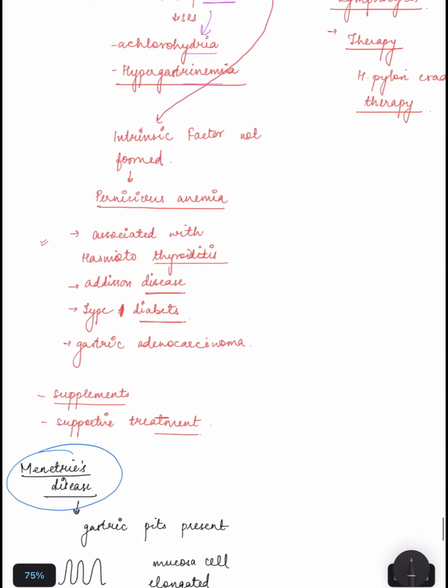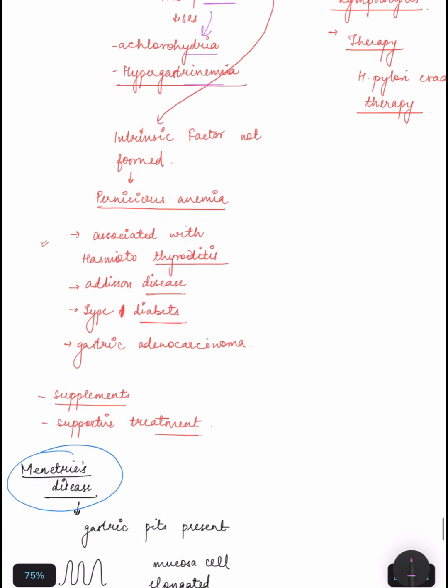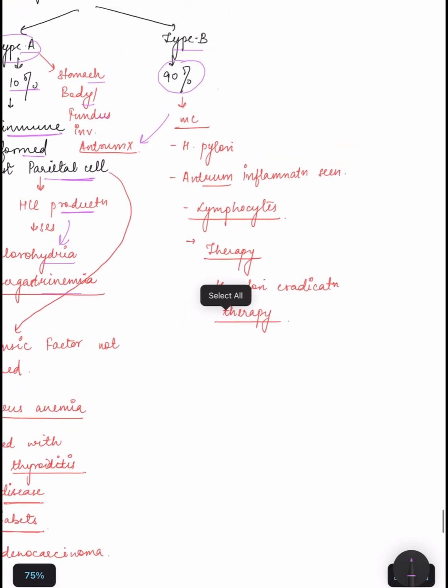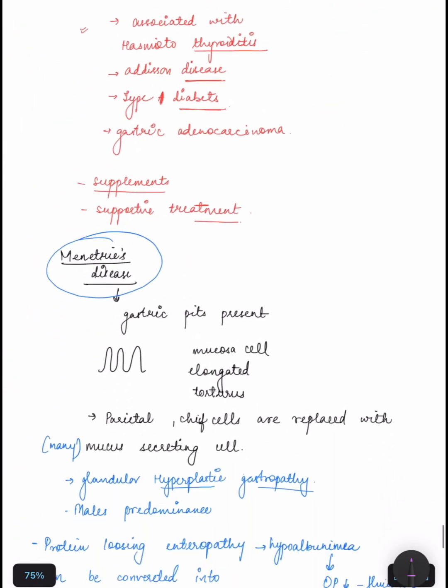If the parietal cells are damaged, intrinsic factor will not form and it will cause pernicious anemia. It is associated with Hashimoto thyroiditis, Addison's disease, type 1 diabetes, and gastric adenocarcinoma. In type B, it is most common, associated with H. pylori infection, and lymphocytes are present. We can provide H. pylori eradication therapy, supplements in type A, and supportive treatment.